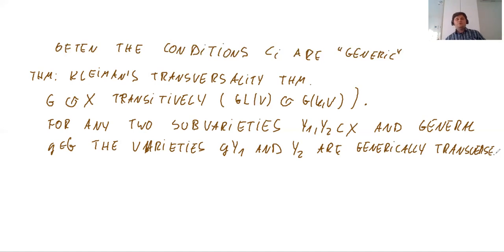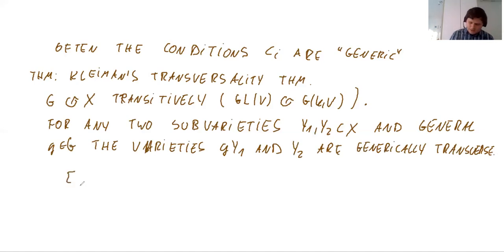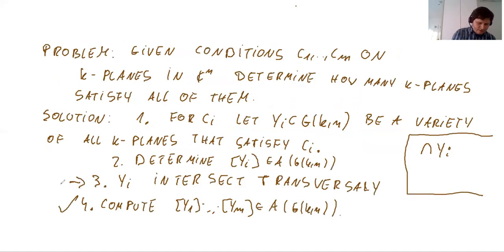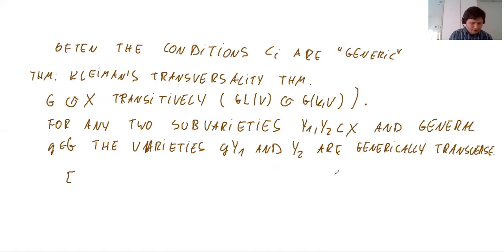In other words, Y_1 and Y_2 may intersect in a strange way — like two lines on a plane may coincide — but once you act on one of those varieties with a general g in G, the intersection will be transverse. Often the challenge is to find the varieties Y_i, and the first two steps — determining the locus and computing the class — can be quite challenging. From the previous exercise, you were basically solving such a problem: determining the locus in the Grassmannian of planes satisfying certain conditions.